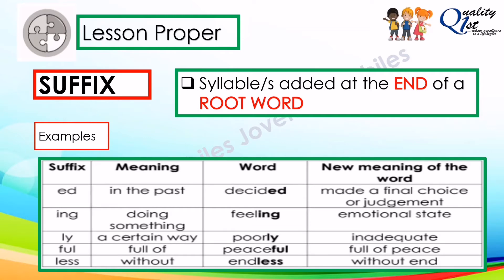The suffix '-ly' means 'in a certain way or manner.' If you have the root word 'poor' and add the suffix '-ly,' this will become 'poorly.' The fourth one is '-ful,' which means 'full of.' If you have the root word 'peace' and add the suffix '-ful,' this will become 'peaceful,' which means 'full of peace.' Lastly, the suffix '-less' means 'without.' If you have the root word 'end' and add the suffix '-less,' this will become 'endless,' meaning 'without end.'